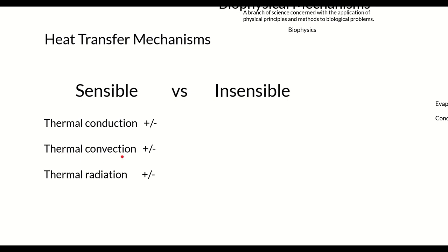Thermal convection involves something moving — air, water, or blood. An animal can gain or lose heat by convection. There are two types: natural convection, where hot air rises, and forced convection, which involves some kind of pump or motor, like a fan.